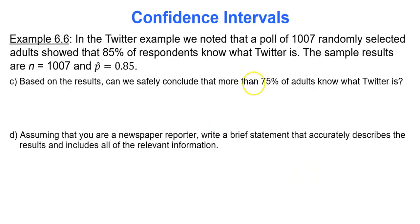Based on the results, can we safely conclude that more than 75% of adults know what Twitter is? The answer to that would be, since our interval was 0.8279 all the way through 0.8721, we can say yes. That's because the true proportion is between 0.8279 and 0.8721, which is basically 82.79% and 87.21%, which is way more than 75%.